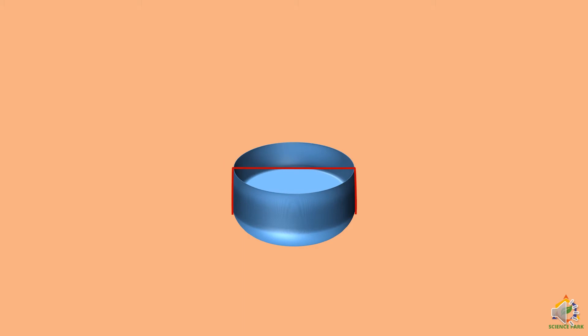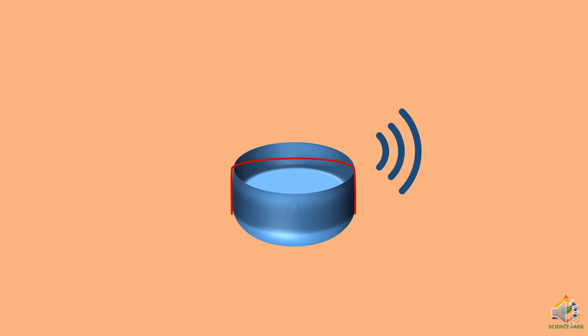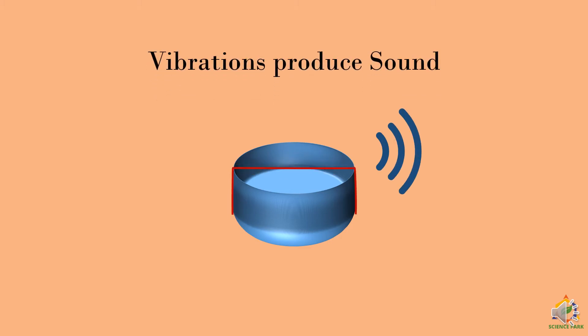Here we have a cup with a rubber band attached. If I pluck it, you can see how vibrations are produced — the rubber band goes up, then down, then up again, then down. In the meantime it emits sound. This to and fro motion of the rubber band is called vibration, and these vibrations produce sound.